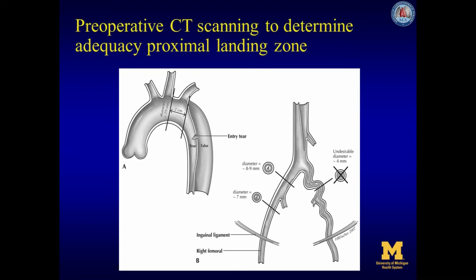Preoperative CT scanning is essential to determine adequacy of the proximal landing zone. We typically extend coverage up to the left subclavian artery in cases of type B aortic dissection, and often complete coverage of the origin of the left subclavian artery is needed to obtain a 2-centimeter proximal landing zone. Measurements are obtained at the proximal edge of the pathologic problem and at 1-centimeter proximal increments. The selected stent graft has a diameter no more than 10% larger than the aortic diameter at the landing zone — for section A, a 31-millimeter graft would be selected.